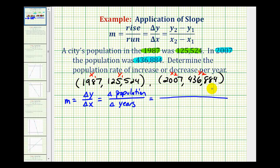So here we'll have the change in population, which is 436,884 minus 125,524. And then for the change in years, or the change in x, we'd have 2007 minus 1,987.